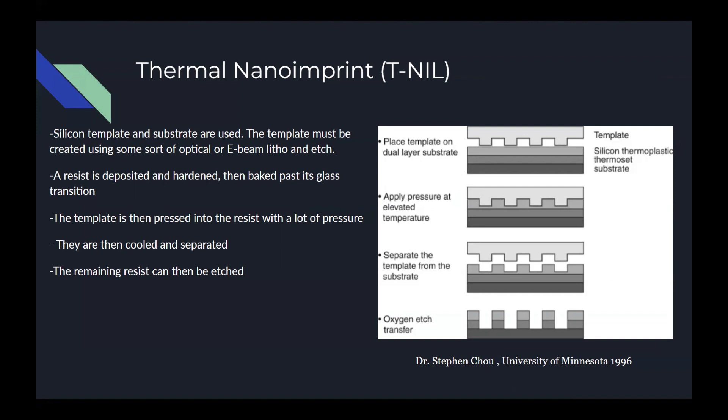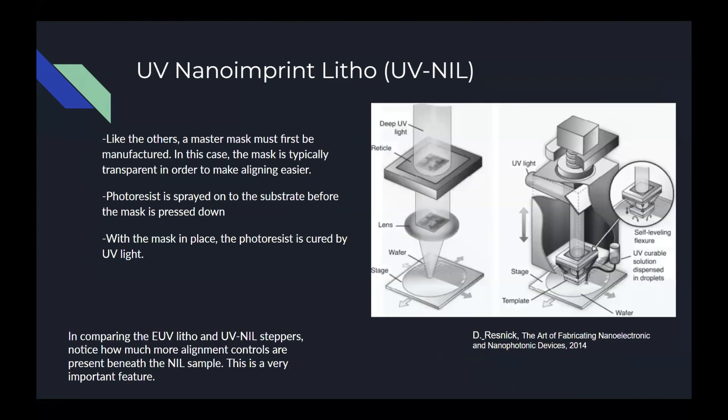Now we will spend the rest of the time investigating ultraviolet nanoimprint lithography. The masks created for this process are very similar to those used in optical lithography — they are transparent and rely on phase-shifting incoming light extremely precisely. Also, UV nanoimprint uses spray-on resist instead of spin-on, for reasons that will be explained later. But for now, we will start by talking about the mask.